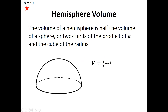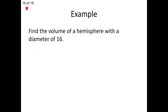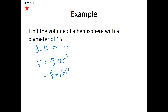We can also find the volume of a hemisphere, which is really just half the volume of a sphere. Since we're filling the space, the formula is 2/3 pi r cubed. For example, find the volume of a hemisphere with a diameter of 16 — so the radius is 8. Plug in: 2/3 times pi times 8 cubed. Nothing is divisible by 3, so the volume is 1024 pi over 3.